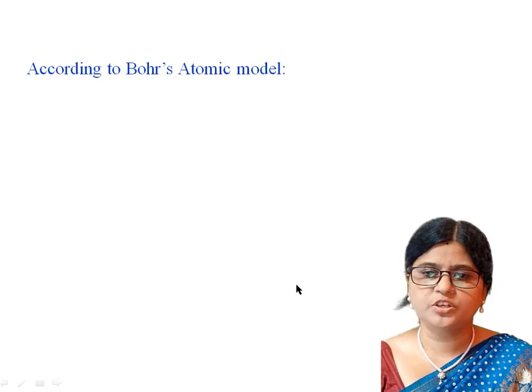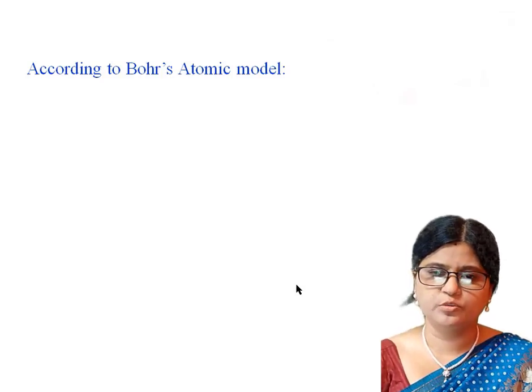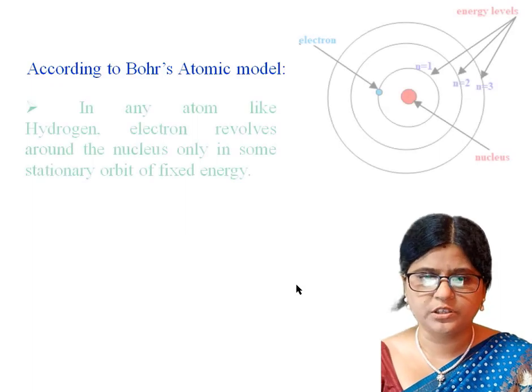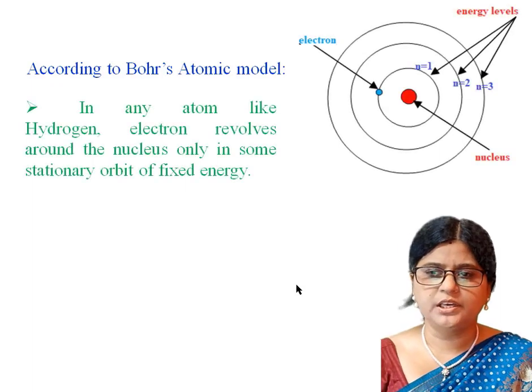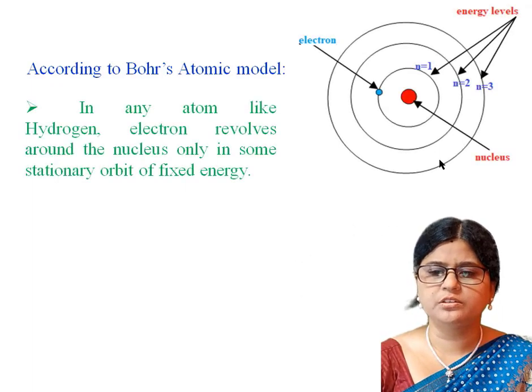Bohr's atomic model is based on certain assumptions. According to Bohr's atomic model, in any atom like hydrogen, electrons revolve around the nucleus only in some fixed stationary orbits.